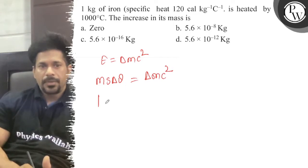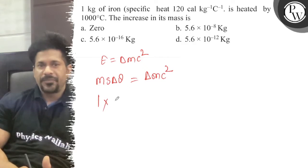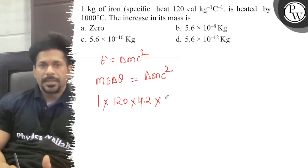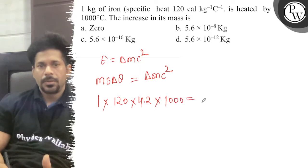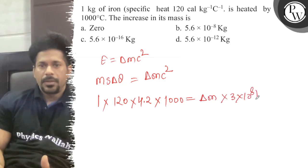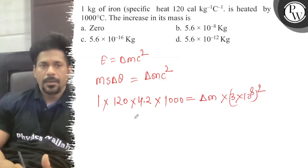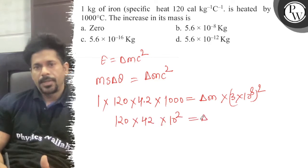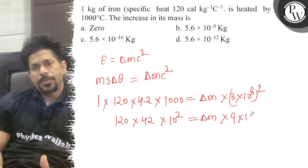Substituting values: m = 1 kg, specific heat s = 120 calorie × 4.2 J/cal, and Δθ = 1000°C. So 1 × 120 × 4.2 × 1000 = Δm × c², where c = 3 × 10⁸ m/s, giving Δm × 9 × 10¹⁶ on the right-hand side.